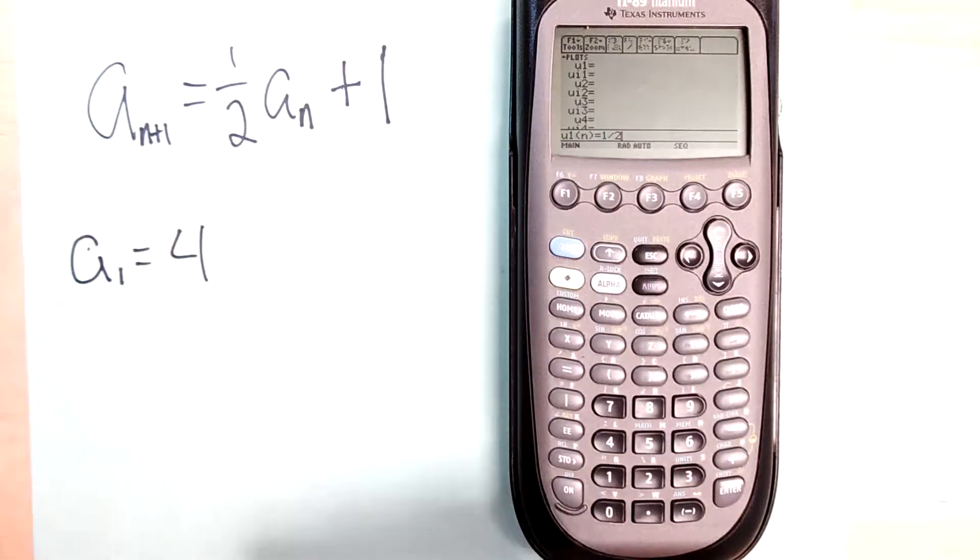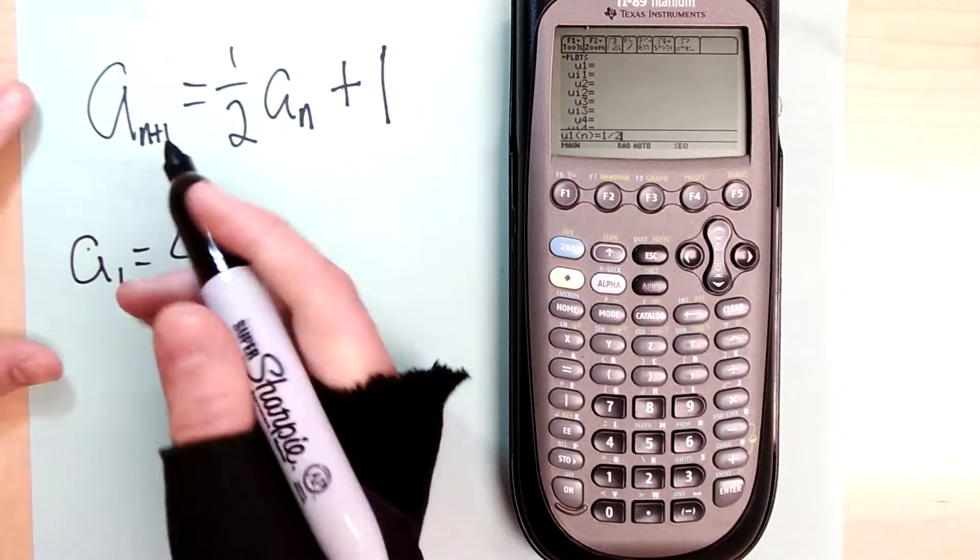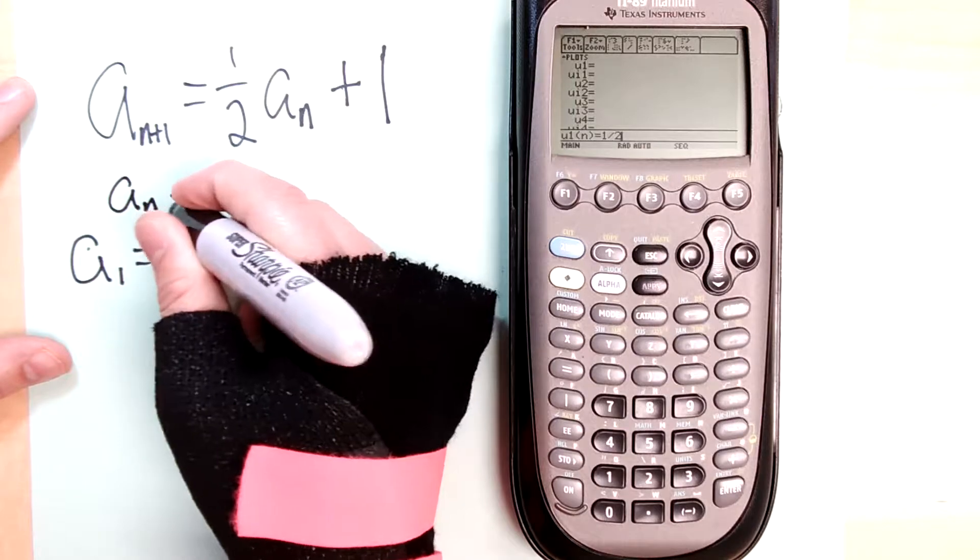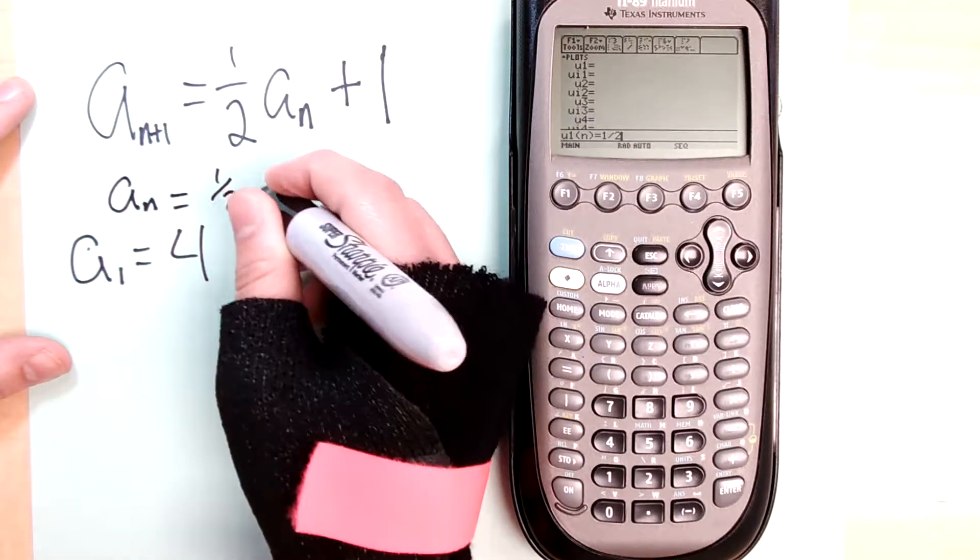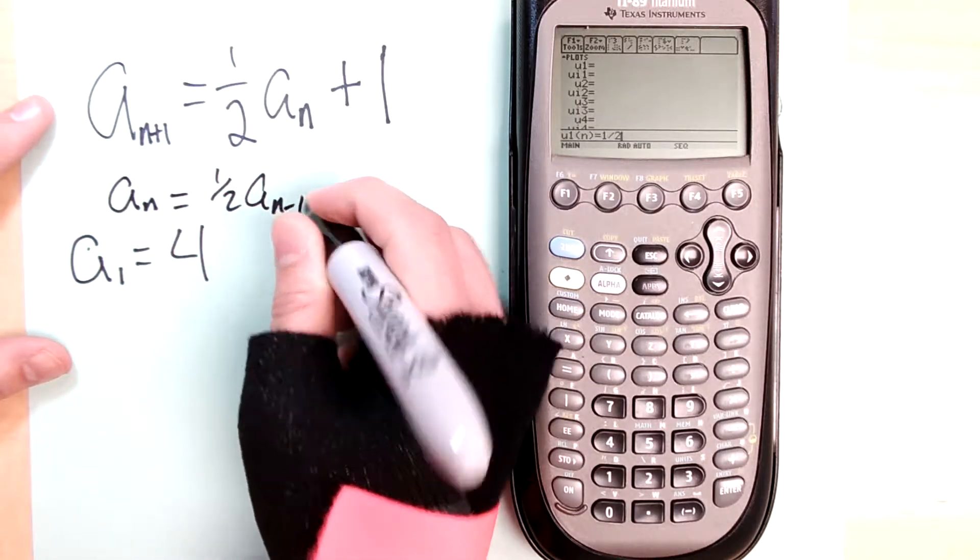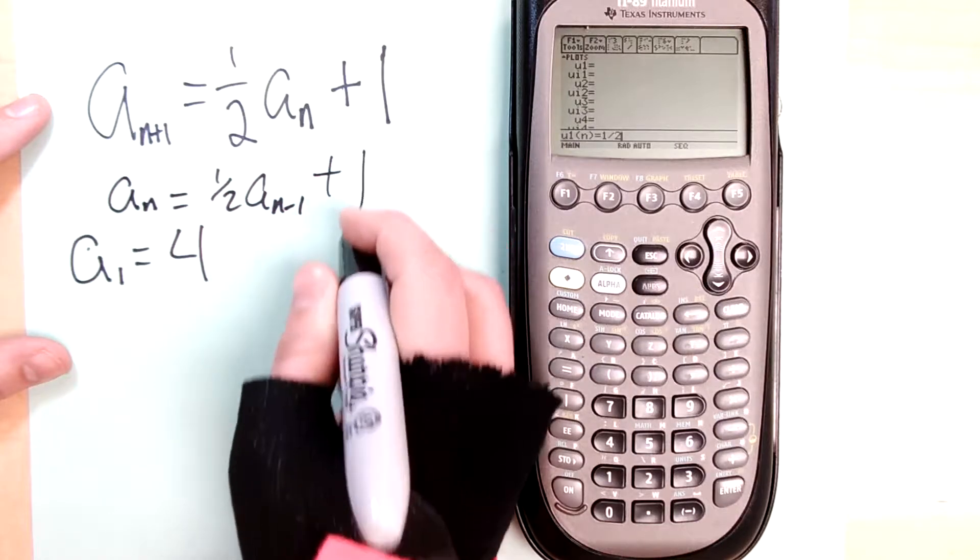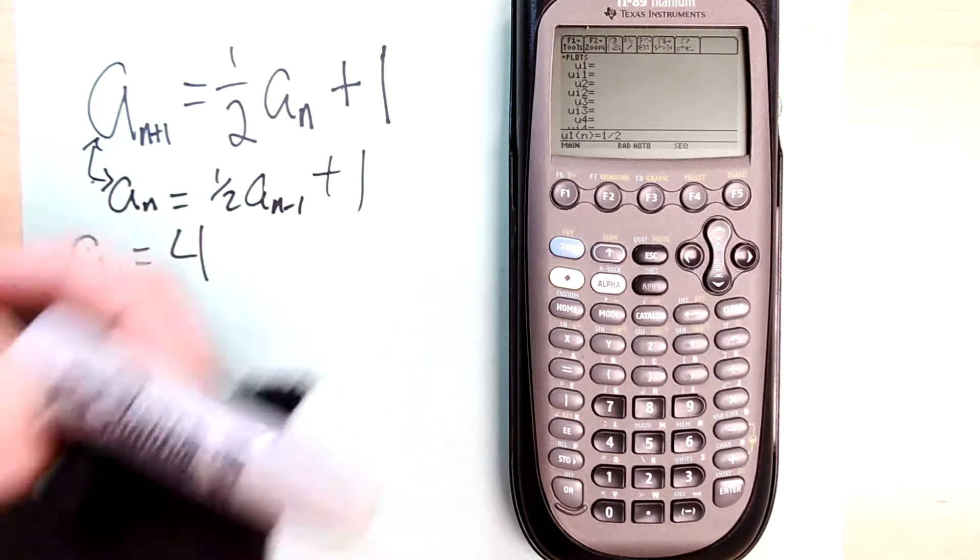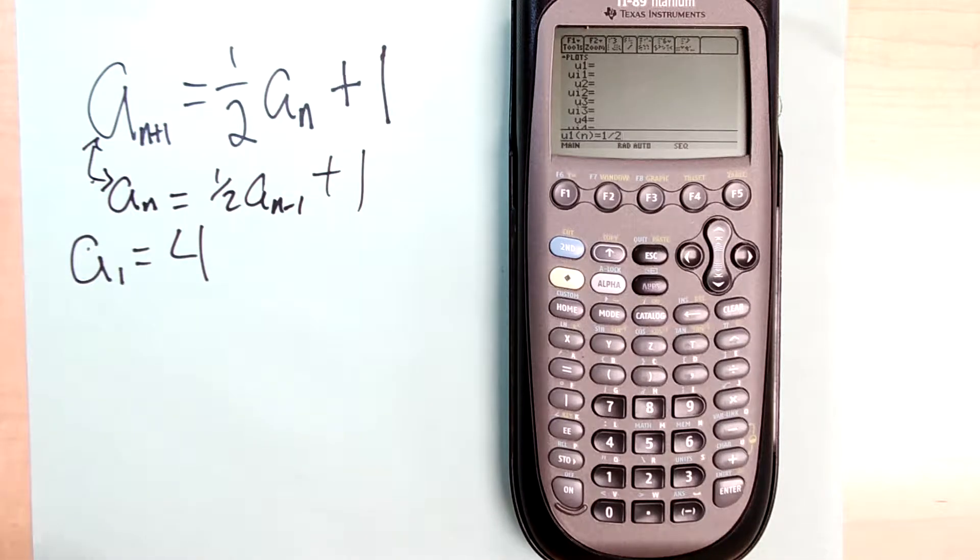So I have to change this a little bit. If this is the n+1 term, I have to think of this as what would the nth term look like, because the way the calculator is allowing me to do this I have to think of it like this. These are the same equations, so I'm rewriting it in a way that the calculator understands it.